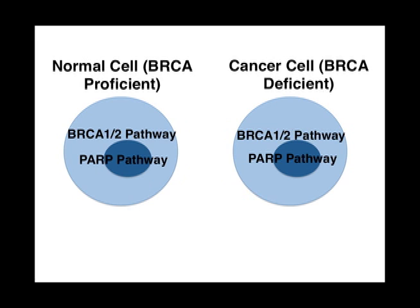In summary, normal cells utilize both BRCA1-2 and PARP pathways to repair DNA. Conversely, in a BRCA1-2 mutant, the cell relies solely on the PARP pathway for DNA repair. This prevents the accumulation of DNA damage. However, in the presence of a PARP inhibitor, there is synthetic lethality because loss of both genes leads to cell death.